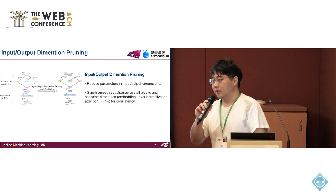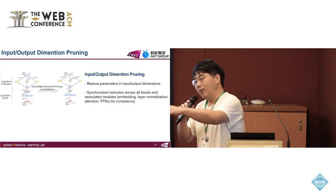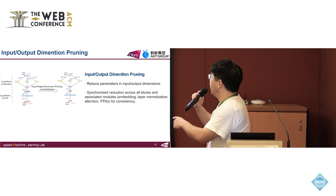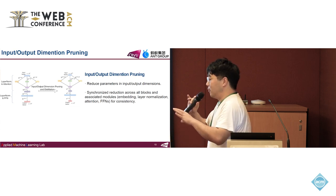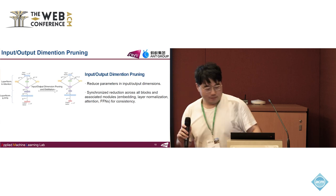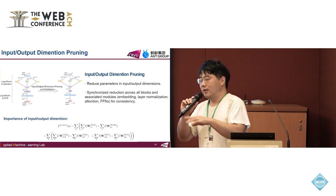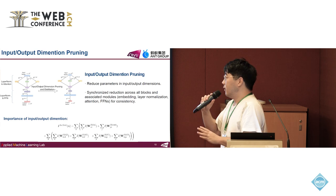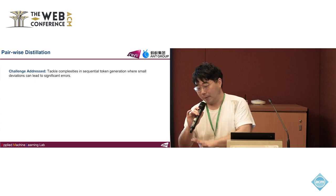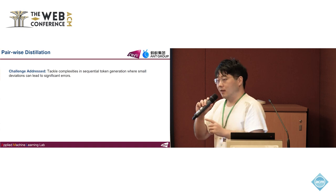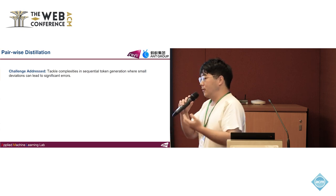The third pruning type is input-output dimension pruning — you can regard it as embedding dimension pruning. The embedding dimension is the same across all blocks, so it is synchronously reduced for all blocks to ensure consistency. After each pruning step — not each stage, but each step — we apply distillation to ensure that the performance does not drop and to recover the model's knowledge.